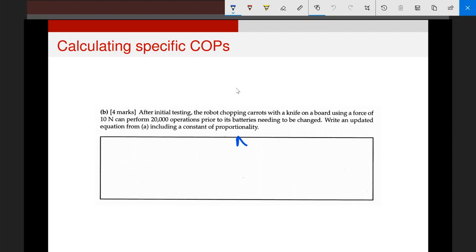So we had previously, number of chops is proportional to one over that. And what we want to do is go from this to a specific form. So doing that is pretty simple. We go N_tot is now equal to k over F_c. And that's just because I've put a constant of proportionality in there and multiplied it across.